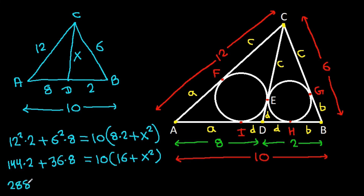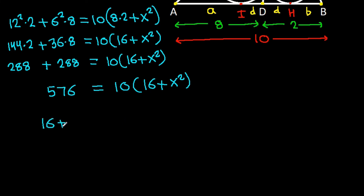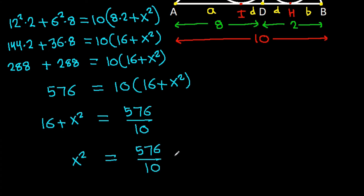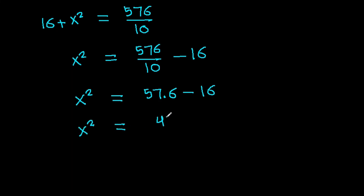So 288 plus 288 equals 10 times (16 plus X²), giving 576 equals 160 plus 10X². Therefore 10X² equals 576 minus 160 equals 416, so X² equals 41.6.